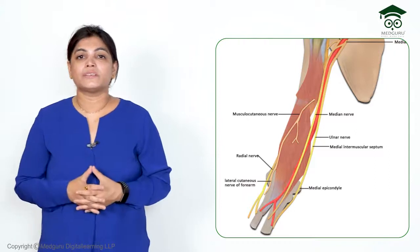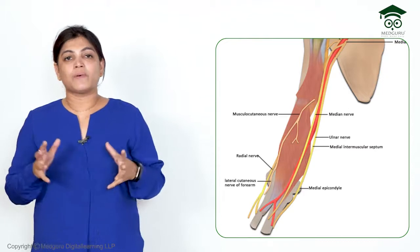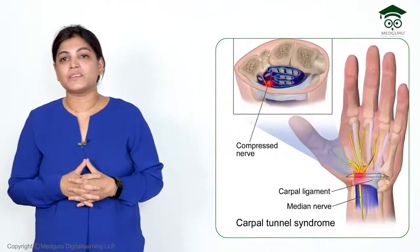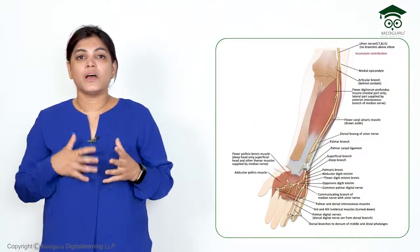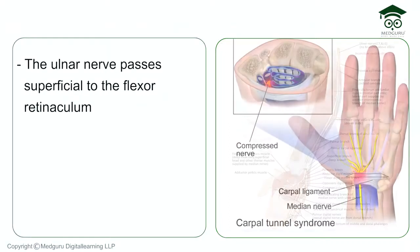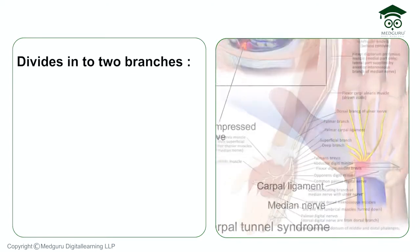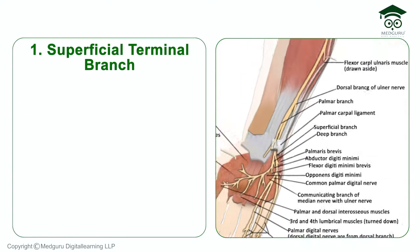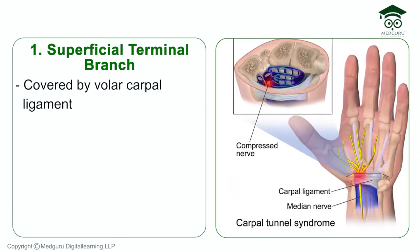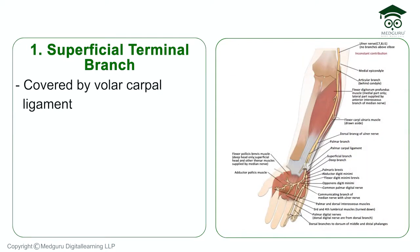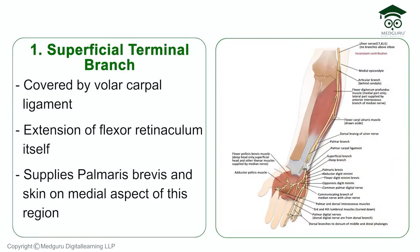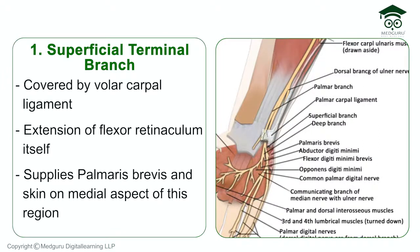The ulnar nerve passes superficial to the flexor retinaculum but still faces other compression points. It divides into two terminal branches: a superficial branch and a deep branch. The superficial branch passes superficial to the flexor retinaculum and is covered by a ligament called the volar carpal ligament, which is an extension of the flexor retinaculum itself.